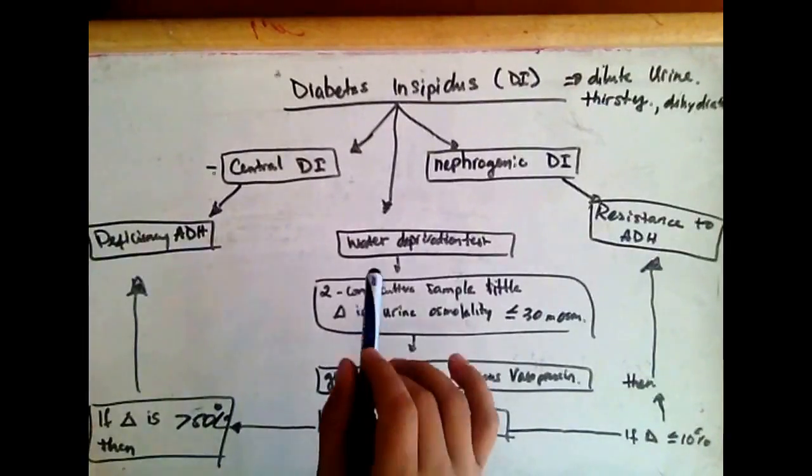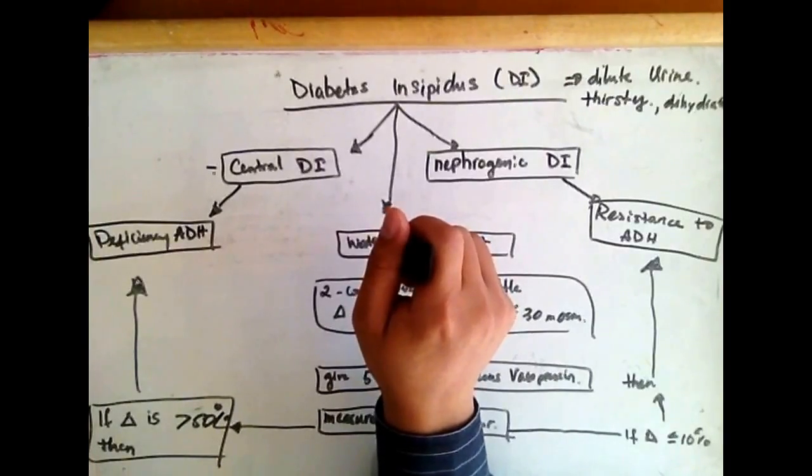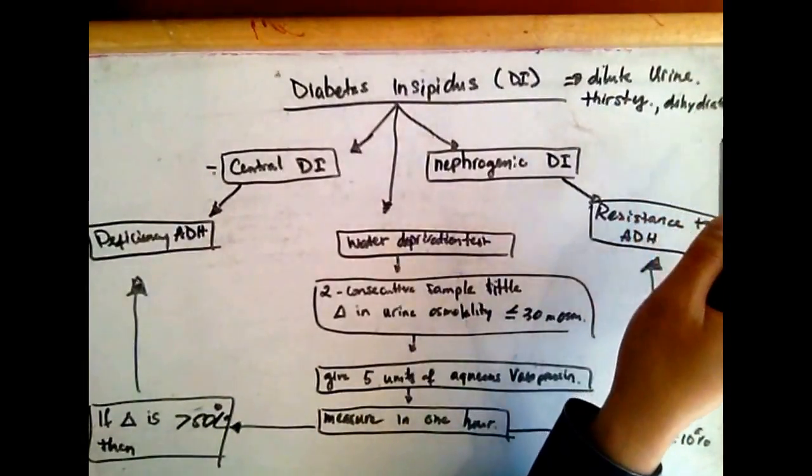Patients with diabetes insipidus pass very watery, diluted urine, making them dehydrated and thirsty.